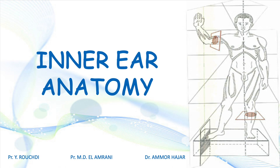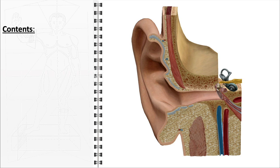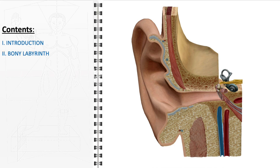In this video, we will embark on a detailed exploration of the inner ear's anatomy. We will begin with an overview of the inner ear, highlighting its location and general structure. Our exploration will include a detailed examination of the bony labyrinth, delving into its integral structures: the vestibule, the semicircular canals, and the cochlea.